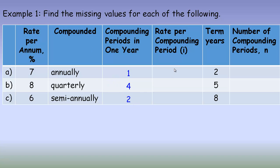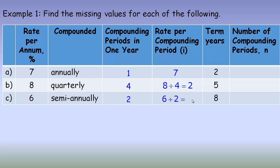The way you calculate the rate per compounding period — I'll leave these as percentages here, though for the actual calculation we use them as decimals — is to take the rate per annum and divide by the number of compounding periods per year. The first is 7% per annum with one compounding period per year, so it's just 7%. The second is 8% per annum compounded 4 times a year: 8 divided by 4 gives 2% per compounding period. The last is 6% per year compounded twice a year: 6 divided by 2 gives 3% per compounding period.